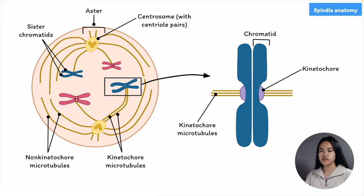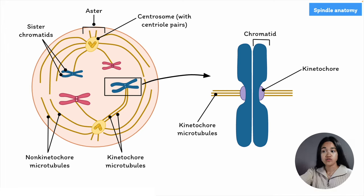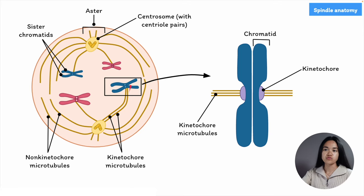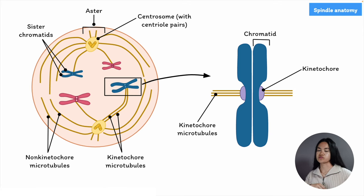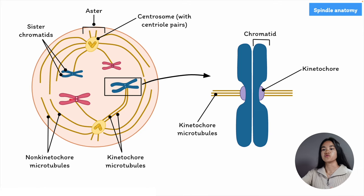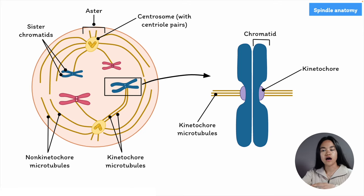The kinetochores face in opposite directions because they are evenly distributing the chromosomes. During prometaphase, some microtubules attach to the kinetochores — these are called kinetochore microtubules. Microtubules that do not attach to kinetochores are called non-kinetochore microtubules; they grow and interact with other non-kinetochore microtubules. When a chromosome's kinetochore is captured by microtubules, the chromosome begins to move toward the pole from which those microtubules extend. Then microtubules from the opposite pole attach to the kinetochore on the other chromatid, and the chromosomes go back and forth until they align halfway between the two ends of the cell — at the equator of the spindle — forming the metaphase plate.